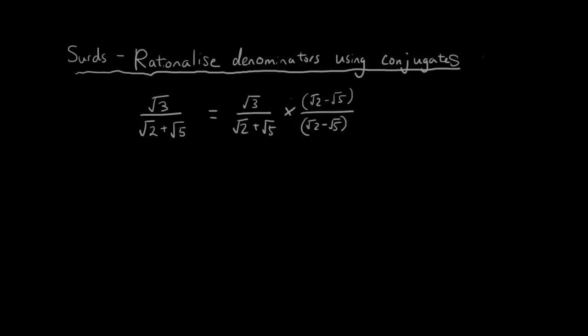So I'm multiplying both the top and the bottom by what we call the conjugate of this pair, this bracket. Conjugate just means that we have two terms where one of them is the sum and the other one is subtraction. So these two are conjugates. A pair of terms where one of them is added together and the other one is subtracted. So this is the conjugate of that, this term here is the conjugate of that.